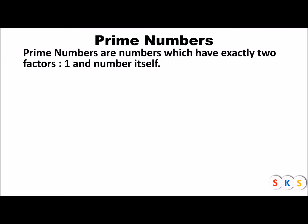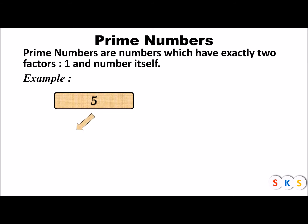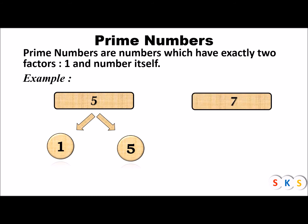The two factors of a prime number are one and the number itself. Here we have the number five. Is five a prime number? The first factor of five is one, because one times five is five. Another factor of five is five itself, because five ones are five. So five has exactly two factors — one and five — hence five is a prime number.